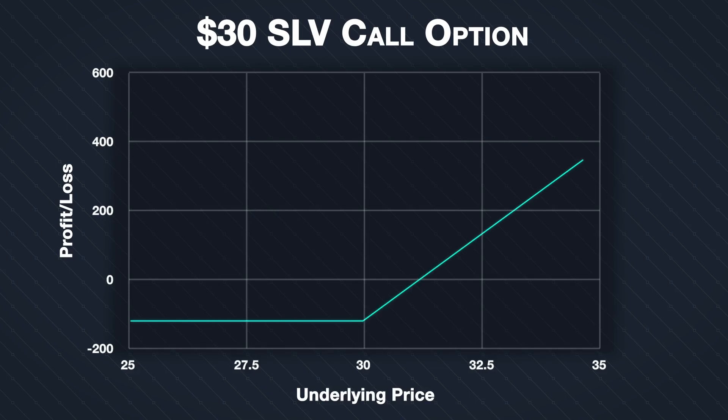When a trader buys a call option, they are hoping that the underlying price rises — specifically that it rises above their strike price. The strike price, though, is not the price at which the trader will break even at expiration, because the option was not free. A premium was paid, and this premium must be taken into account to calculate where the option will break even if held to expiry.